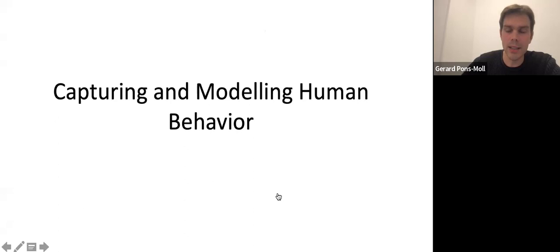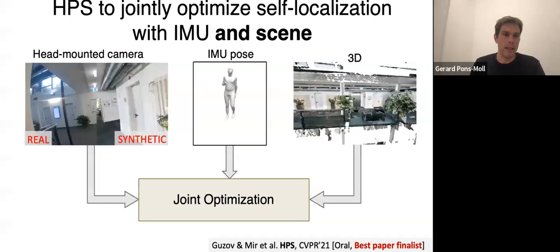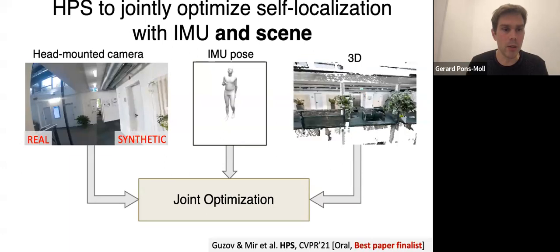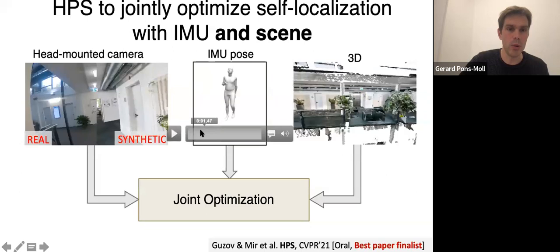At the very end of the talk, I want to give you a gist of the work we're doing in capturing and modeling human behavior. At the beginning I mentioned that one of the goals of AI should be to train agents that can interpret the world and perform actions in it. One way of training such agents is by looking at how humans actually do this. In this work, we want to capture how humans interact in the 3D world.